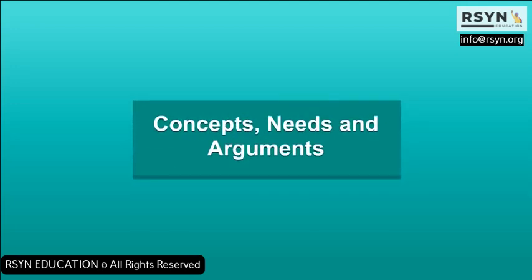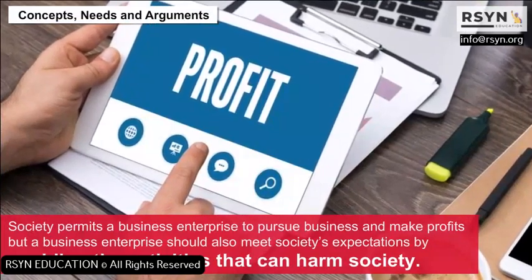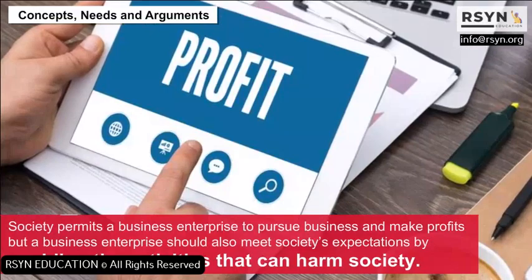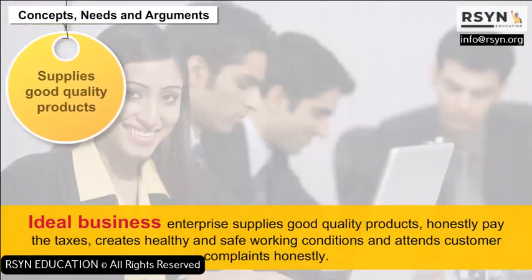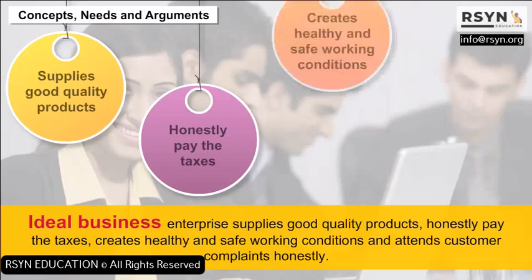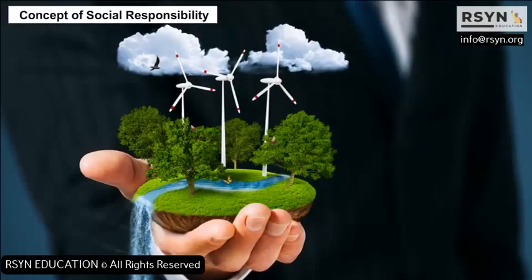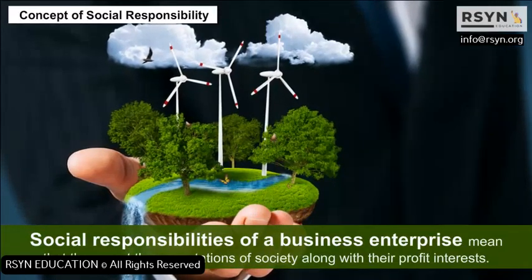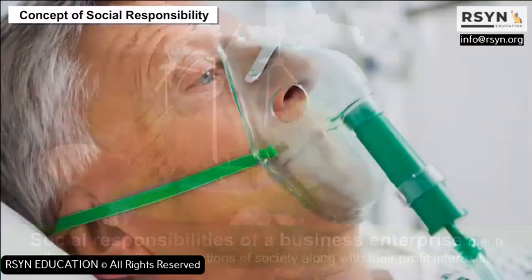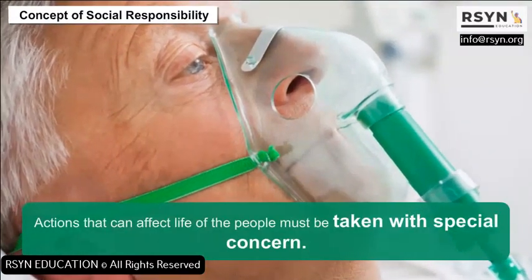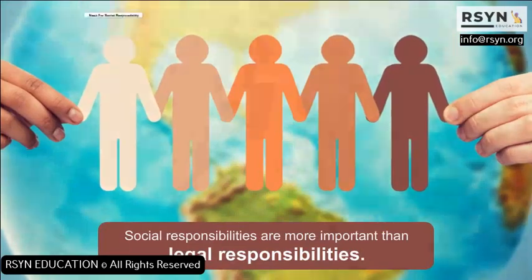Concepts, Needs and Arguments: Society permits a business enterprise to pursue business and make profits, but a business enterprise should also meet society's expectations by avoiding activities that can harm society. An ideal business enterprise supplies good quality products, honestly pays taxes, creates healthy and safe working conditions, and attends to customer complaints honestly. Social responsibilities of a business enterprise mean that they meet the expectations of society along with their profit interests, and actions that can affect the life of people must be taken with special concern.